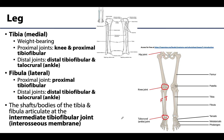Similar to the radius and ulna, the tibia and fibula articulate with one another in three regions, forming three separate joints: a proximal tibiofibular joint, a distal tibiofibular joint, and an intermediate tibiofibular joint that connects the shafts of the tibia and fibula via an interosseous membrane — an example of a fibrous joint.